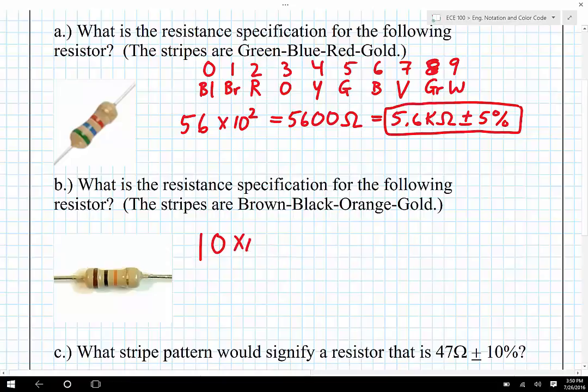And this is going to be times 10 to the something, that something is orange, and therefore it's going to be times 10 to the third power. So this is 10 times 1,000, which is 10,000 ohms.